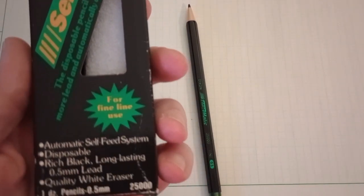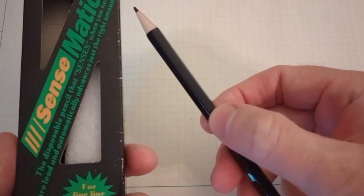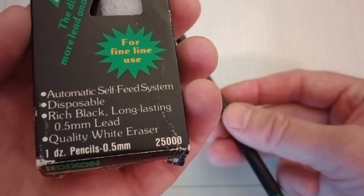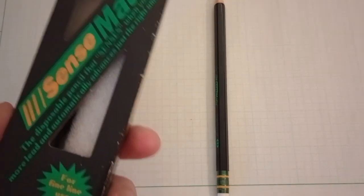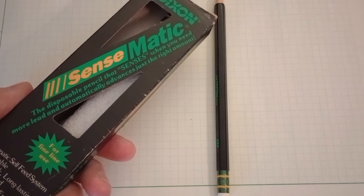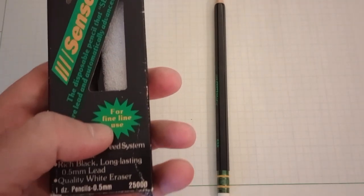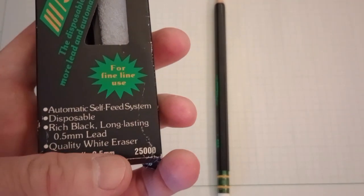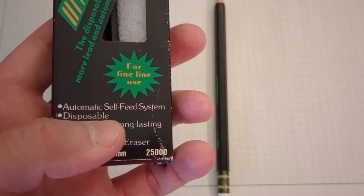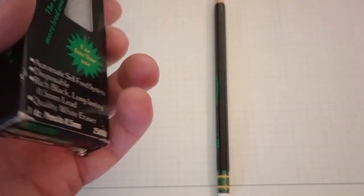So let's first look at the packaging here for the original box. So this is black. You can see there's one in there and I've taken one out. And when I found it, there were only two in the box. That's okay. Originally came as a box of a dozen. If we look at the labeling here. Sensomatic, the disposable pencil that senses when you need more lead and automatically advances just the right amount. By Dixon. And for fine line use, see that it is a 0.5 millimeter lead, rich black, long lasting 0.5 millimeter lead, disposable automatic self-feed system with a quality white eraser.